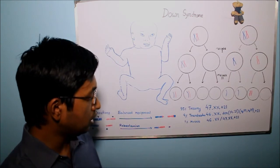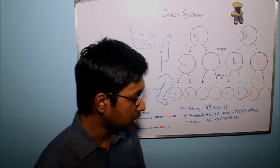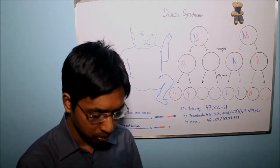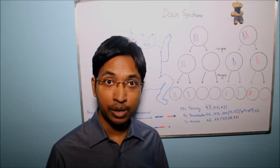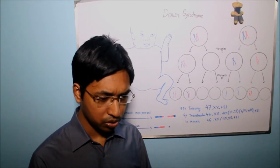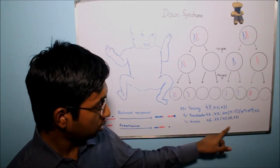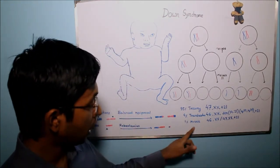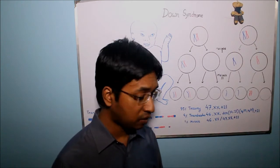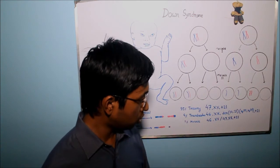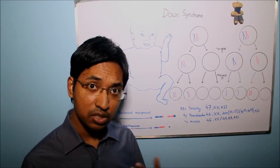In 1% of cases, individuals with Down syndrome are mosaics, meaning they contain a mixture of cells. In some cells the karyotype is normal with 46 chromosomes and no extra chromosome 21, while in other cells there is trisomy 21 with 47 chromosomes. Such individuals arise due to non-disjunction occurring in mitosis during the early stages of embryogenesis.